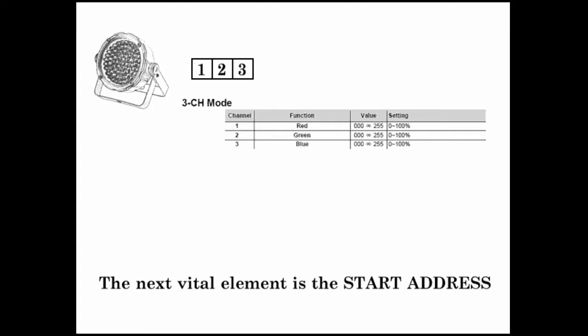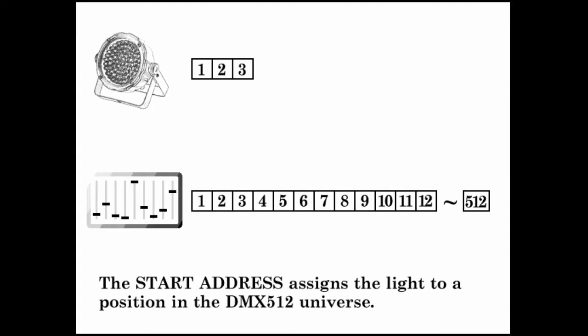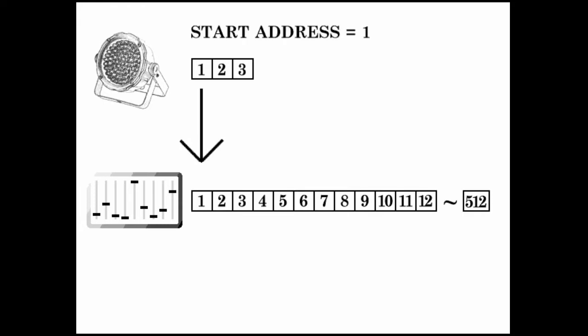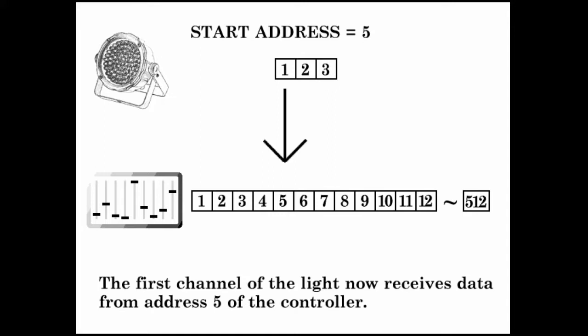The next vital element is the start address. The start address assigns the light to a position in the DMX 512 universe. You can point your light to any address along the 512 address lineup. The first channel of the light now receives data from address 5 of the controller.